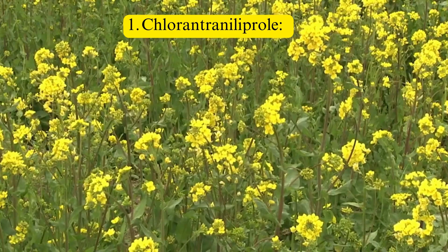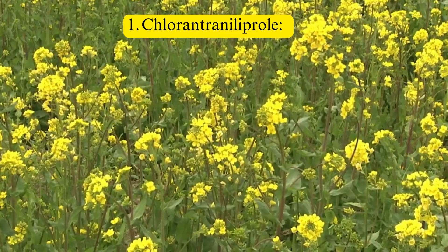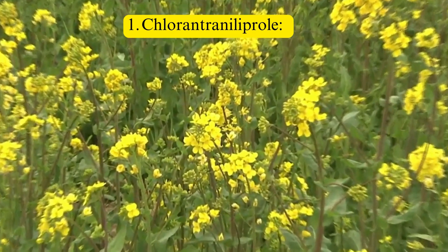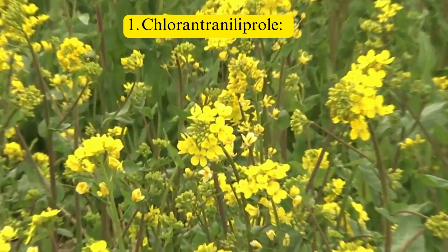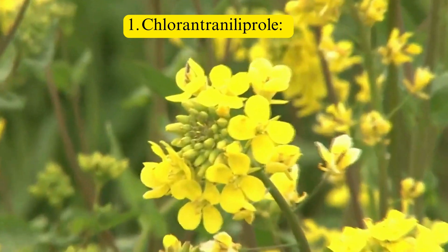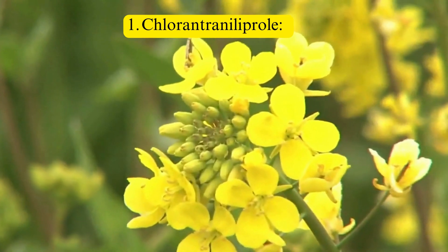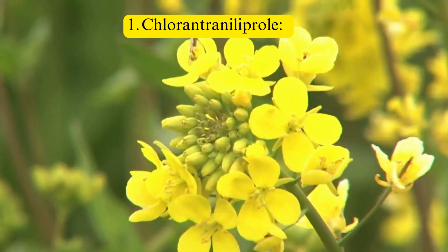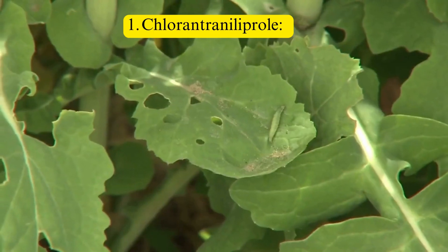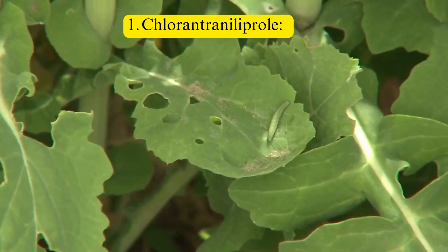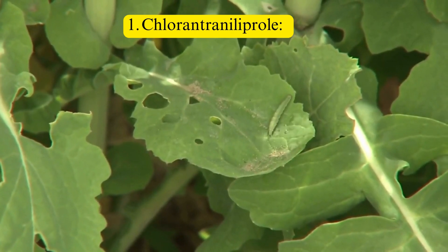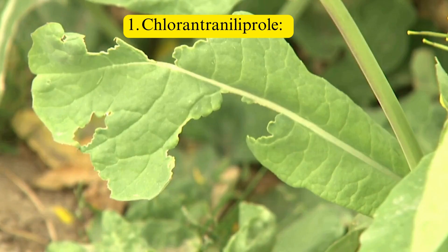Chlorantraniliprole: This diamide insecticide activates ryanodine receptors, leading to uncontrolled calcium release in muscle cells, causing paralysis and death. Studies show chlorantraniliprole provides maximum initial efficacy against diamondback moths.